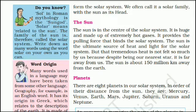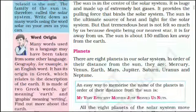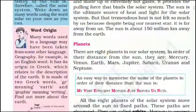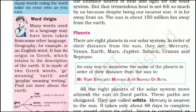Word origin: Many words used in a language may have been taken from some other language. 'Geography', for example, is an English word with its origin in Greek, relating to the description of the Earth. It is made of two Greek words — 'ge', meaning Earth, and 'graphia', meaning writing. Find out more about the Earth.